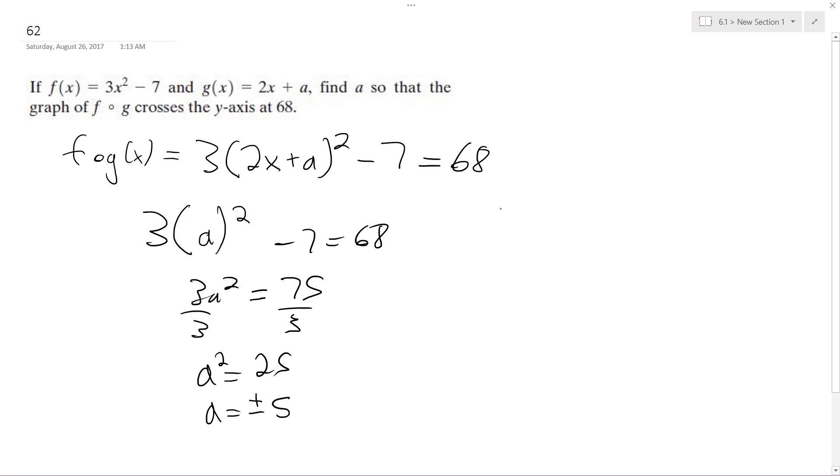So let's try that out. Three times two times zero minus five squared minus seven. All I did is I plugged in zero because it's crossing the y-axis, and it crosses the y-axis at x equals zero. So three times negative five squared minus seven.